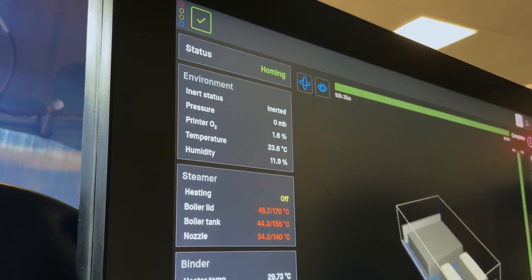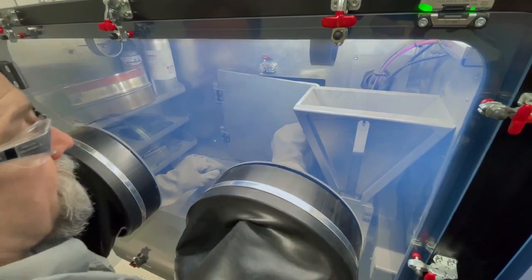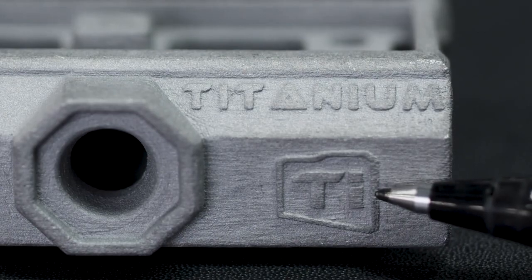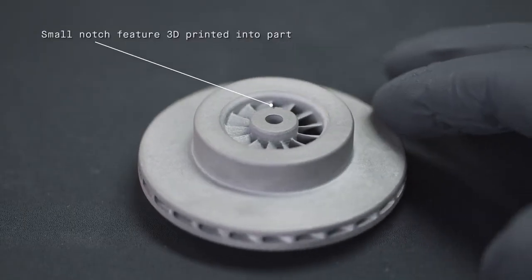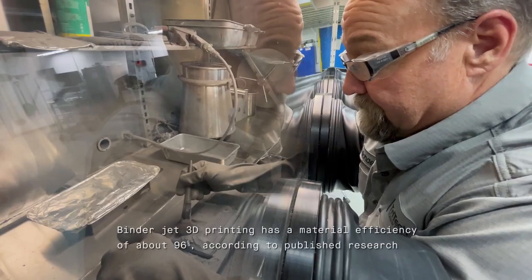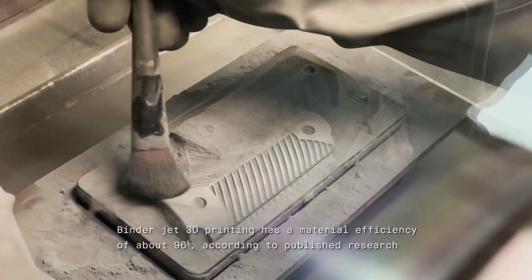Our P1 has an inert chamber and that allows us to produce reactive parts safely and it definitely opens us up to a whole new realm of titanium parts at a very competitive cost. Every pound of powder that goes into the part, that is the only pound of powder you need, and all the remaining powder we're able to reuse, so the yields are very good.